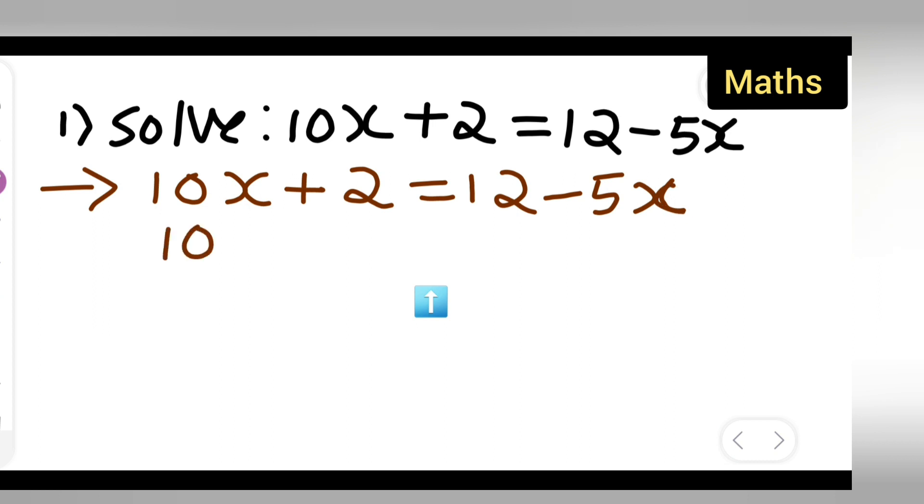Now variable term is 10x, minus will become plus 5x. Is equal to 12 minus 2.